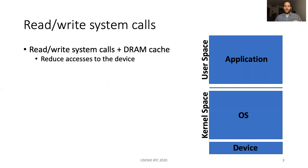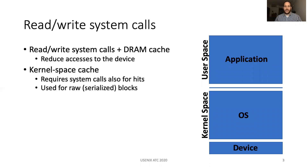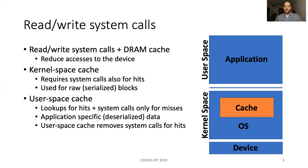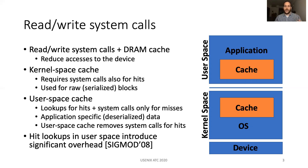The common way to access persistent data is to use read-write system calls and a DRAM cache in order to reduce the number of accesses to the device. A kernel space cache, as we see in this figure, requires system calls for hits and contains raw serialized device blocks. A user space cache requires cache lookups in the case of hits and system calls only for misses, and is generally used to store application-specific deserialized data. Although a user space cache removes system calls in the case of hits, it still requires software cache lookups in the common path, which introduces overhead.